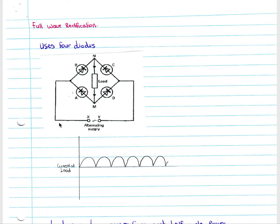We realize that even though our source is alternating, the current received at the load is always going from the top to the bottom. Therefore the direction of current through the load never alternates — it is always flowing from top to bottom through the load. The current at our load keeps one direction and never goes below the x-axis.